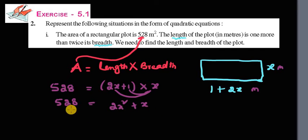If we take these terms to one side, we get 2X squared plus X minus 528 equals 0. This is a quadratic equation. This is the final solution—we have formed the quadratic equation. No need to solve this question, just frame the quadratic equation.